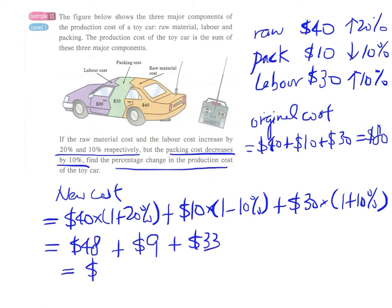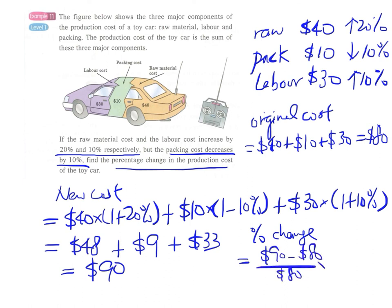The final new production cost is $90. But we have to find the percentage change, not just the final cost. The percentage change is (90 - 80) / 80 times 100%, which gives us 12.5% increase.